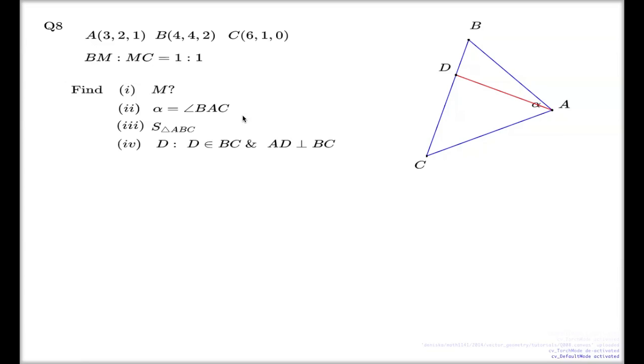There is another point, point M, which splits the BC side. Question 8 has four parts in it. The part which is relevant to the current discussion are the last three, and I'm going to present the solution to only the fourth part, part 4.